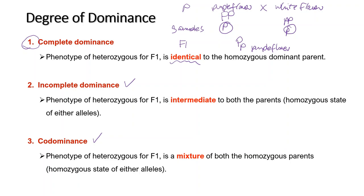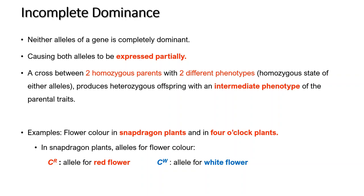In incomplete dominance, the phenotype of heterozygous F1 is intermediate to both parents when the parents are in the homozygous state of either allele. Incomplete dominance occurs when neither allele of a gene is completely dominant over the other, causing both alleles to be expressed partially. A cross between two homozygous parents with different phenotypes produces heterozygous offspring with an intermediate phenotype. Examples include flower color in snapdragon plants and 4 o'clock plants.